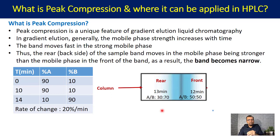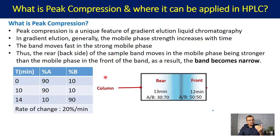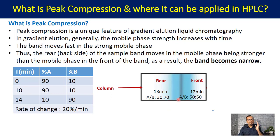Does the proportion of B increase or decrease with the increase in time? With increase in time, the proportion of B — the stronger component of the mobile phase — got increased. At 12 minutes it was 50%, but at 13 minutes it is now 70%. The rear or back side of the sample band moves in a mobile phase that is stronger. The mobile phase containing a greater proportion of organic is the stronger mobile phase, and therefore the mobile phase at the rear side is stronger compared to the mobile phase at the front side of the band.